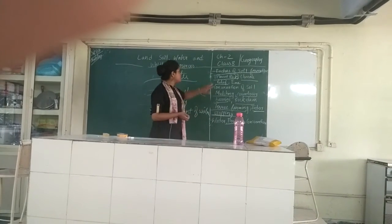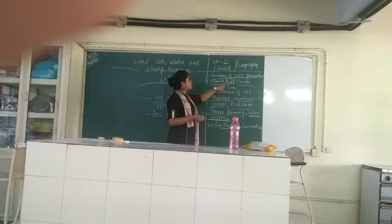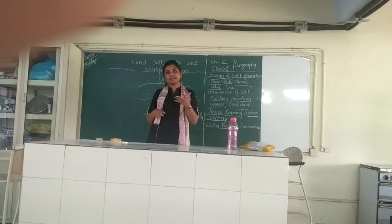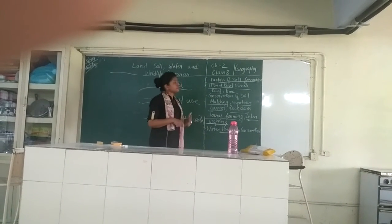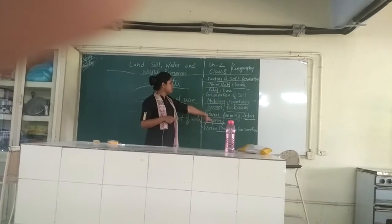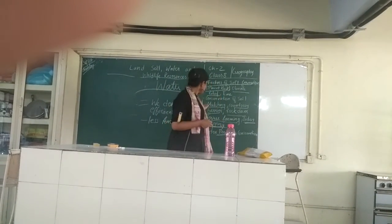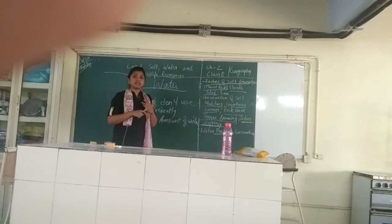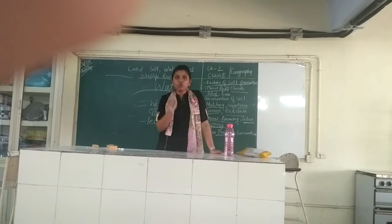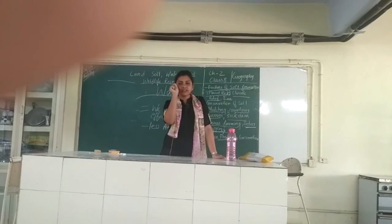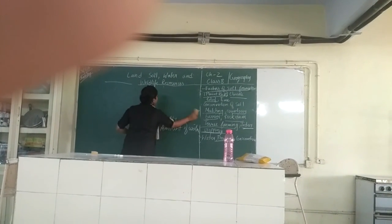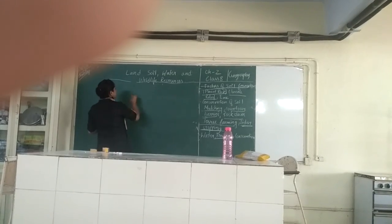So what did we study today? We studied the factors of soil formation — how parent rock, climate, relief, and time are important. Then we studied how we can conserve the soil through mulching, contour barriers, and intercropping. We also studied water, its problems, and how we can conserve it. For the next class, I will give you a question on the best possible way of conserving water in your area, and we will also start the topic of distribution of natural vegetation and wildlife.